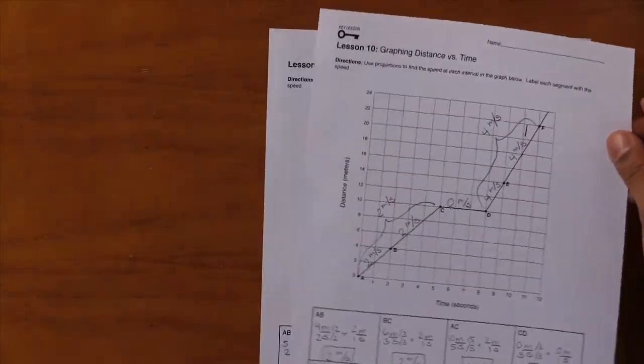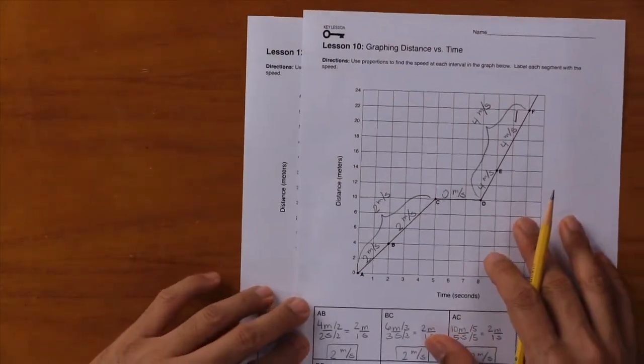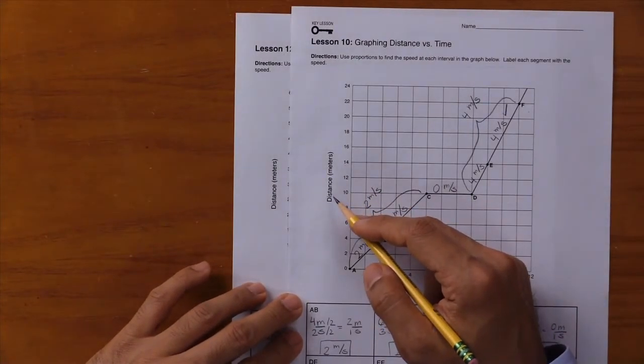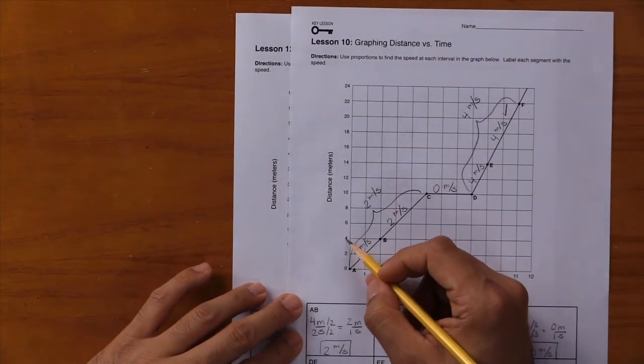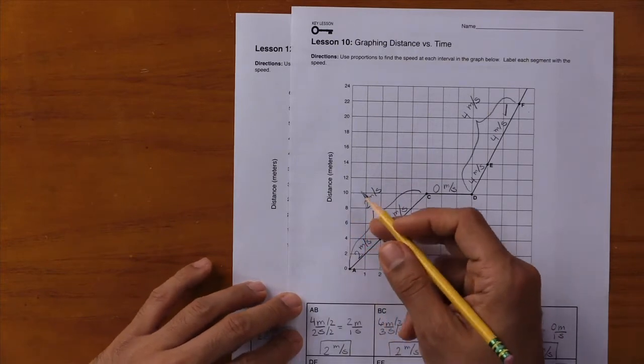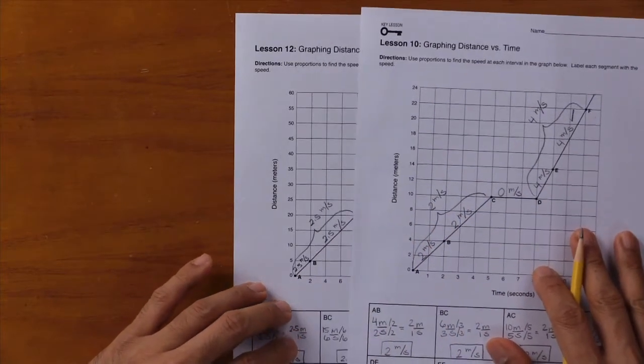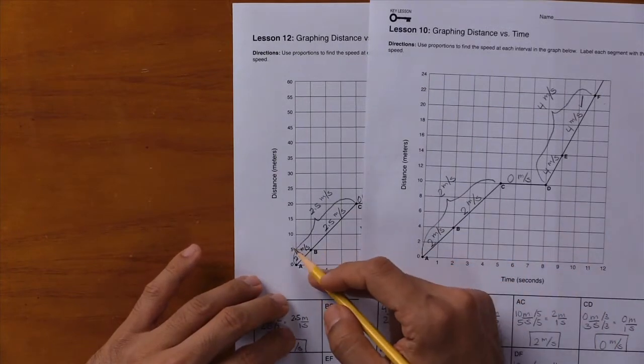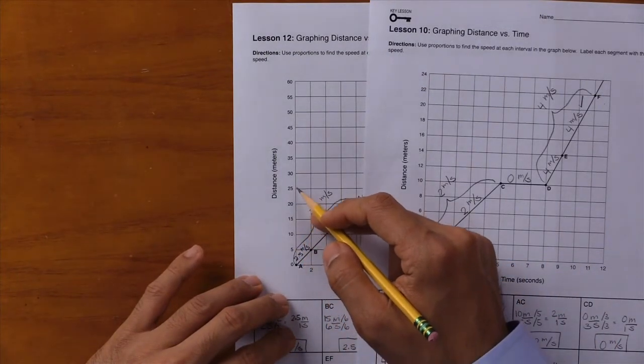Here in lesson 10, when you're looking at the distance, it's being measured in intervals of 2 meters. Here we have 2, 4, 6, 8, 10. In lesson 12, it uses intervals of 5 meters: 5, 10, 15, 20, 25.